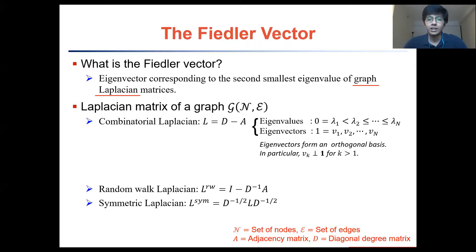The Fiedler vector is defined as the eigenvector corresponding to the second smallest eigenvalue of a graph Laplacian matrix. There are three main types of graph Laplacian matrices: the combinatorial Laplacian, the random walk Laplacian, and the symmetric Laplacian. But let's first focus on the combinatorial Laplacian and its eigenvalues and eigenvectors. As shown, the first eigenvalue is zero and the vector of all ones is the corresponding eigenvector. It is the eigenvector equation, however, for the second eigenpair that we are interested in, where v2 is the Fiedler vector and lambda 2 corresponds to the algebraic connectivity of the graph.